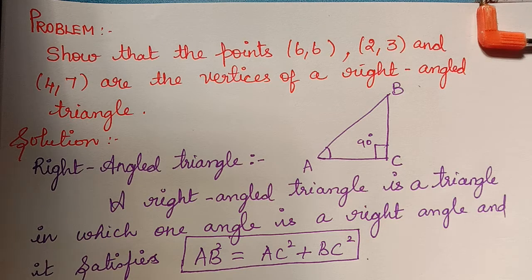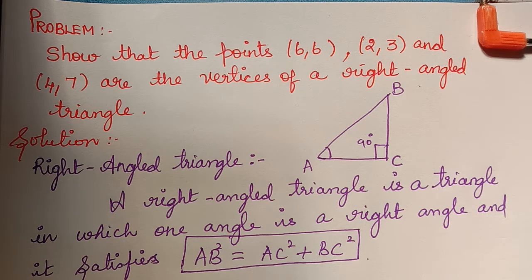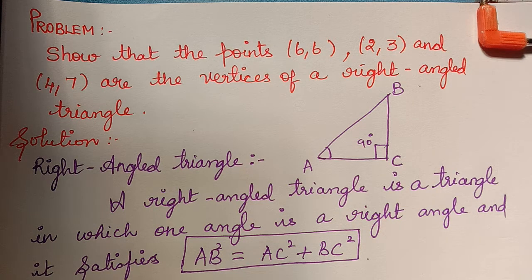Dear students, here we have the next problem under the topic coordinate geometry: show that the points 6,6 and 2,3 and 4,7 are the vertices of a right-angled triangle.